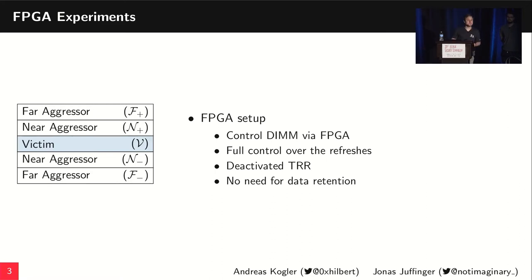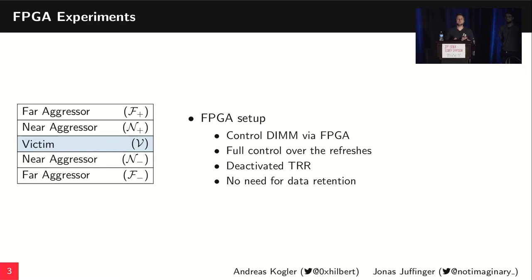On the left side you see the notation we will use in the slides from now on. We have the victim V — the target of the Rowhammer attack. Around it are the near aggressors, the direct neighboring rows, and we have the far aggressors, the rows which are distance two apart from the victim.